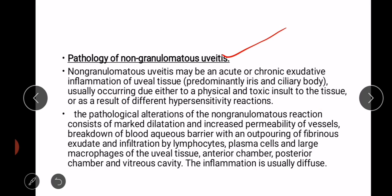Now we will discuss pathology of non-granulomatous uveitis. Non-granulomatous uveitis may be an acute or chronic exudative inflammation of the uveal tissue, mainly iris and ciliary body, usually occurring due to either a physical and toxic insult to the tissue or as a result of different hypersensitivity reactions.